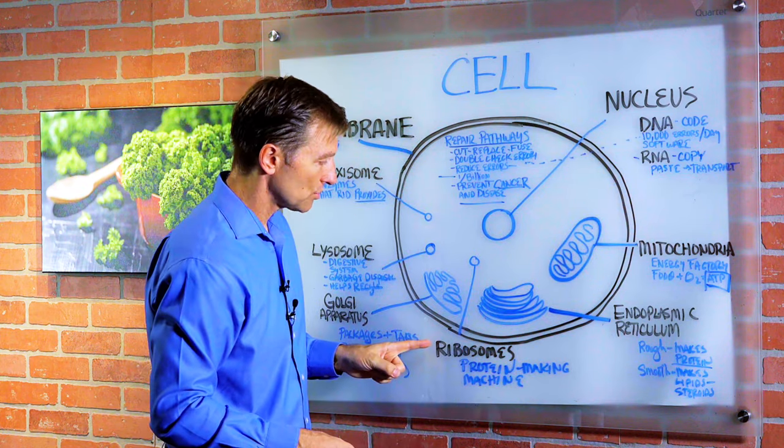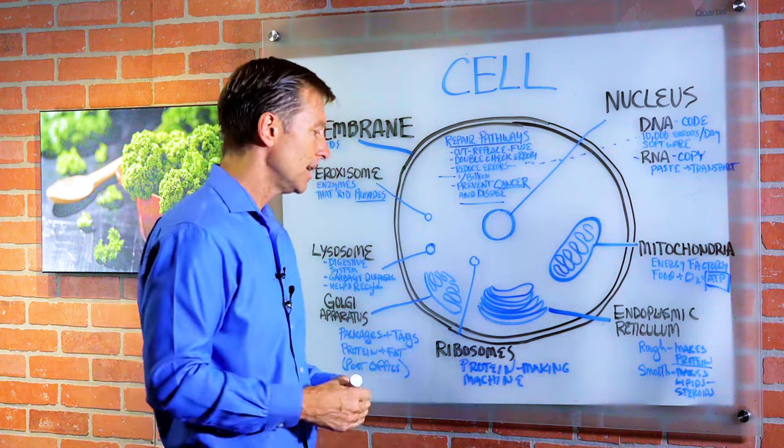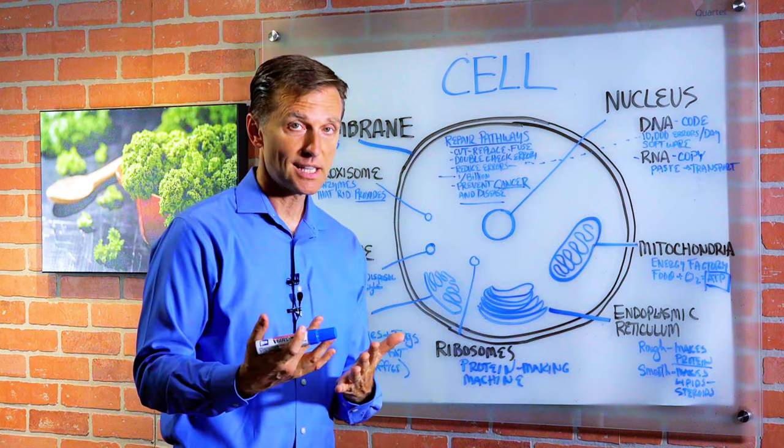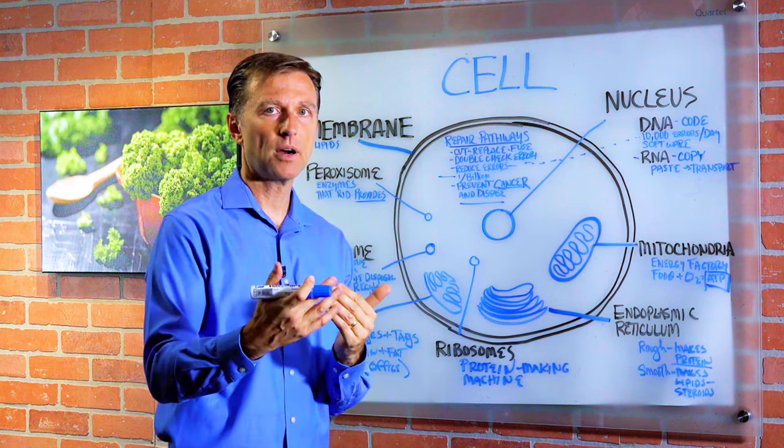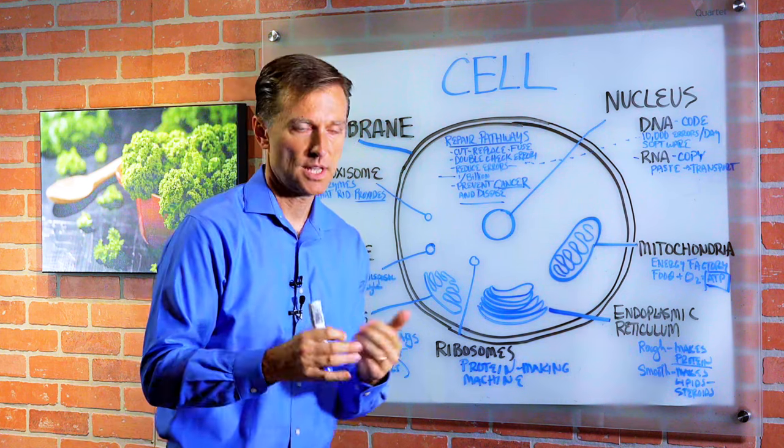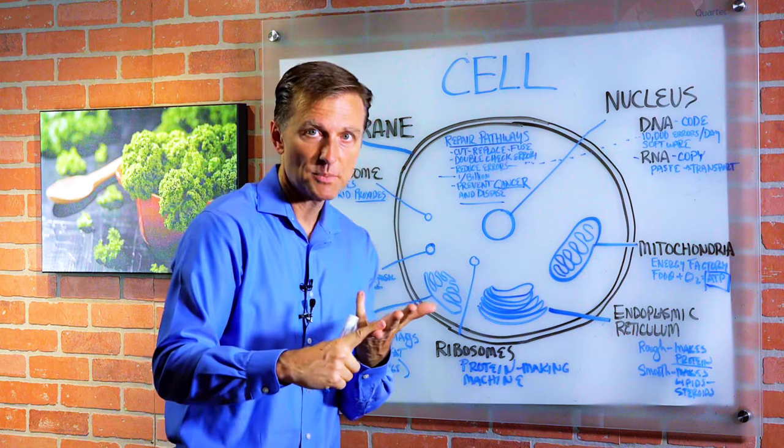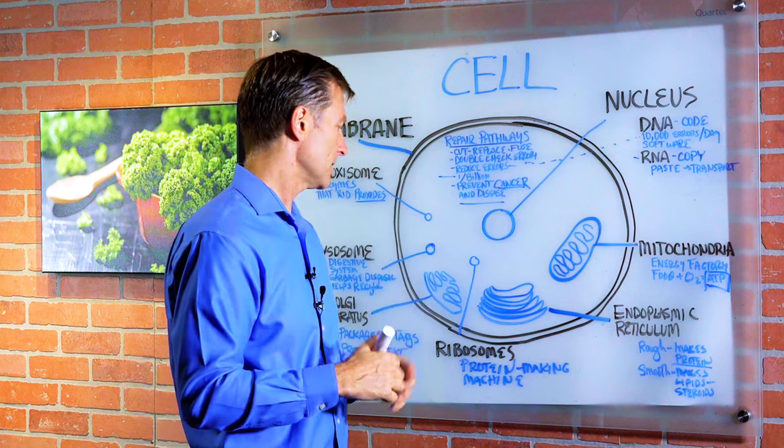And then we have these little things called ribosomes, which are basically protein-making machines on steroids. So they actually help in making different protein structures, not just for body parts, but for body chemicals like hormones and neurotransmitters, blood cells, you name it.